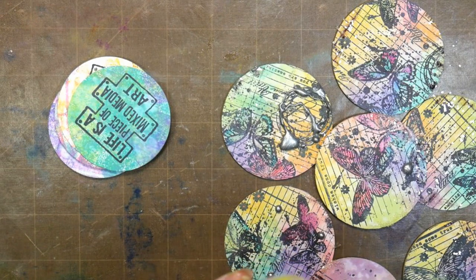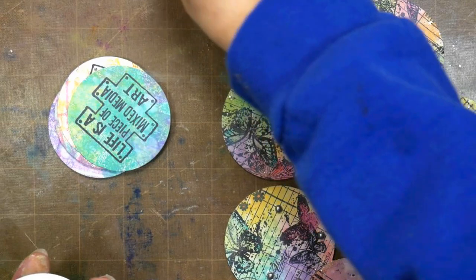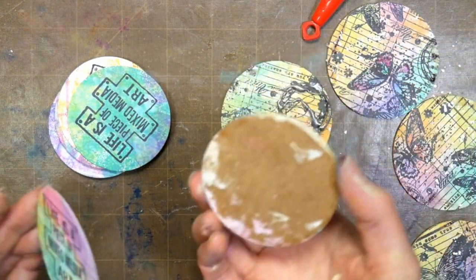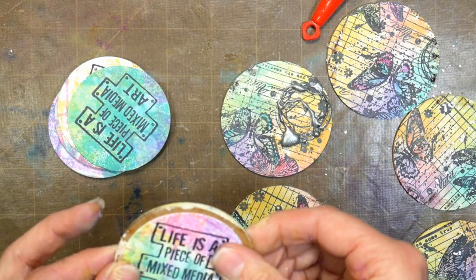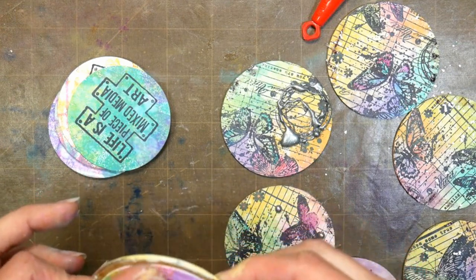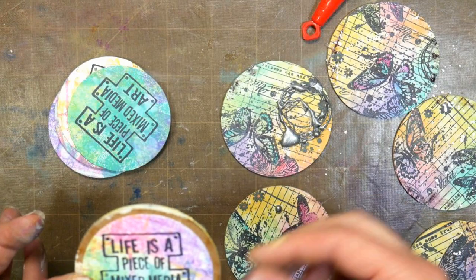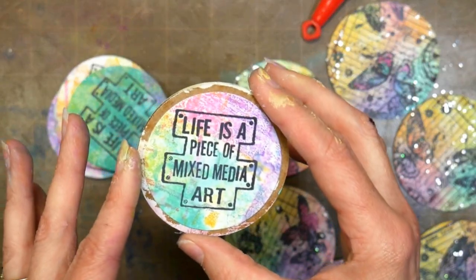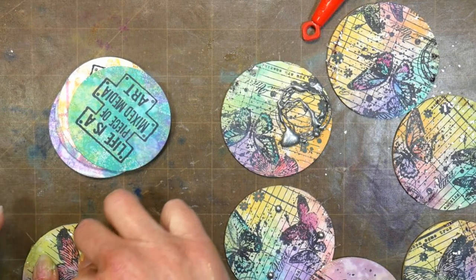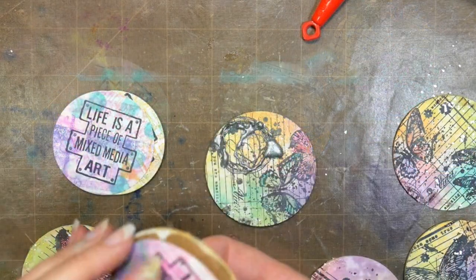I'm going to press it firmly onto the back of one of the coins and you just want to make sure that you get really good contact there so it doesn't lift up. Then I'm just going to let it dry face down on the table, or the paper side face down on the table, so that way it can be pressed down really well and I shouldn't have to worry about any air bubbles.